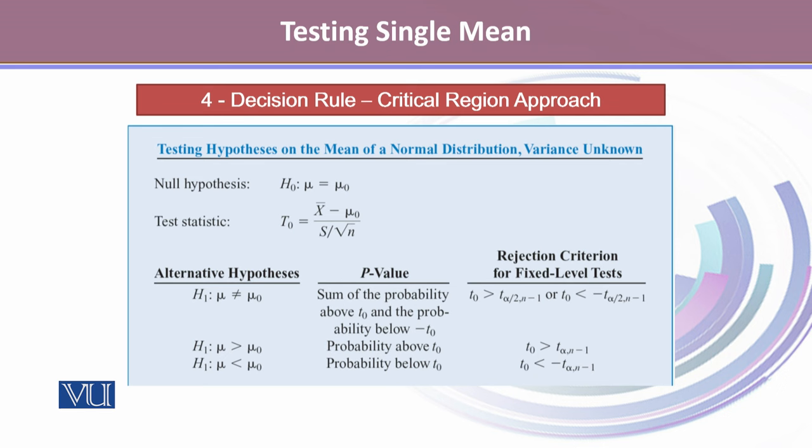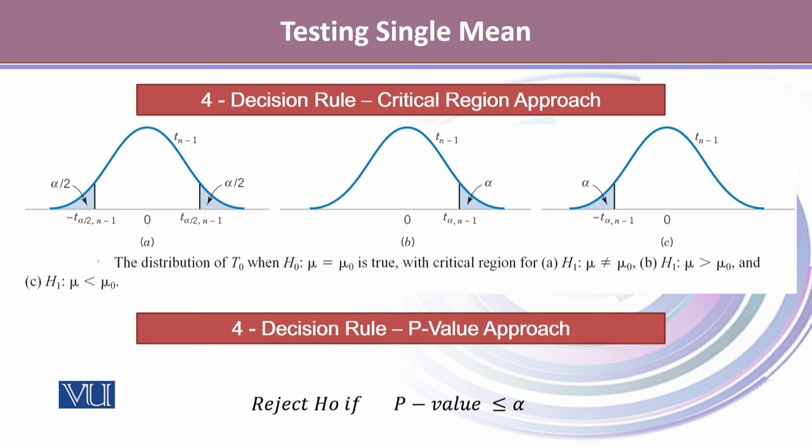For a two-tailed test we use t(alpha/2), but for a one-tailed test we use t(alpha) only. When H1 is mu less than mu0, the critical region is t0 less than minus t(alpha, n-1). The decision rule in the critical region approach is illustrated by a bell curve with minus t(alpha/2, n-1) on the left tail and t(alpha/2, n-1) on the right tail, and likewise for one-tailed tests. Using the p-value approach, we reject H0 if the p-value is less than or equal to alpha.